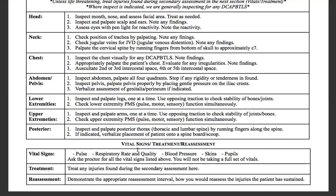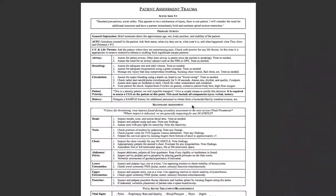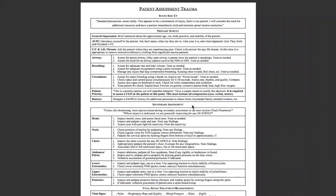Finally, get a set of vital signs: pulse, respiratory rate and quality, blood pressure, skin signs, and pupils. Ask the proctor for all vital signs listed — you will not be physically taking them, just verbalizing. Treatment of any injuries found during the secondary assessment is done after the vital signs. Then reassess: demonstrate the appropriate reassessment interval — 5 minutes for unstable patients, 15 minutes for stable patients — and how you would reassess injuries sustained. There is no verbal report on this assessment. Since it's so hands-on, it's easier to remember with practice. A demonstration video is linked below, and feel free to message on Canvas or leave a comment with any questions.